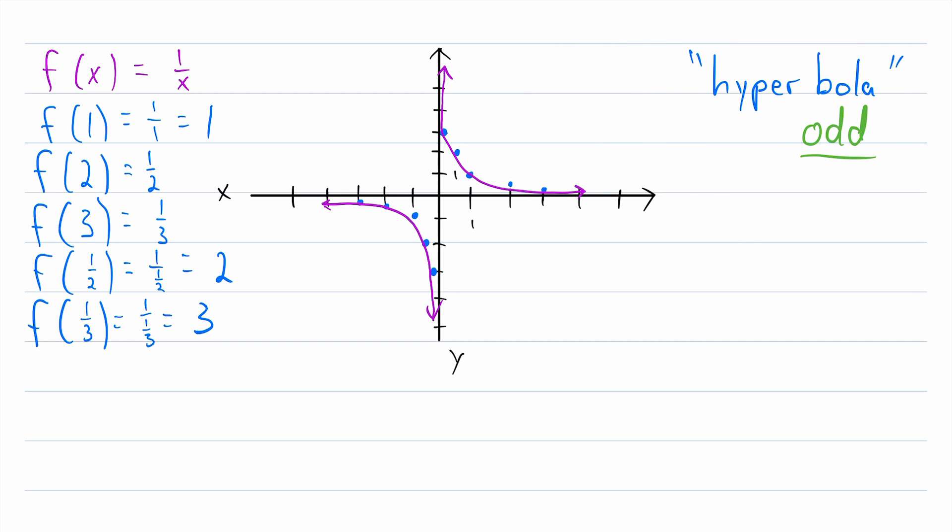You might also notice that it appears to have a horizontal asymptote at y equals zero, and it appears to have a vertical asymptote at x equals zero. So first, why do we have this vertical asymptote at x equals zero? Well, of course, that's because we cannot actually input x equals zero into the reciprocal function. x equals zero is not in the domain. And again, that's because we can't divide by zero, the function is undefined at x equals zero.